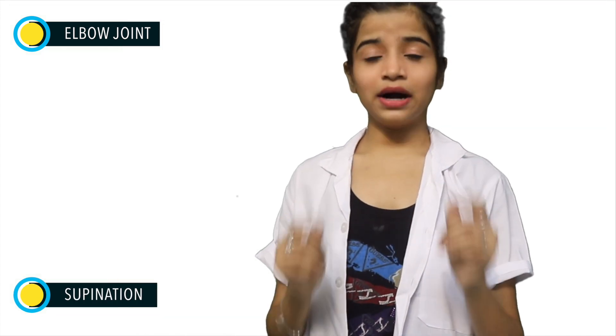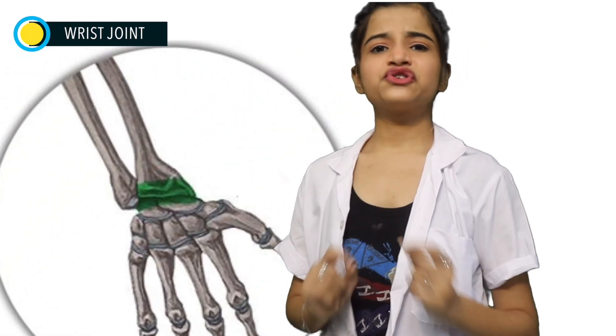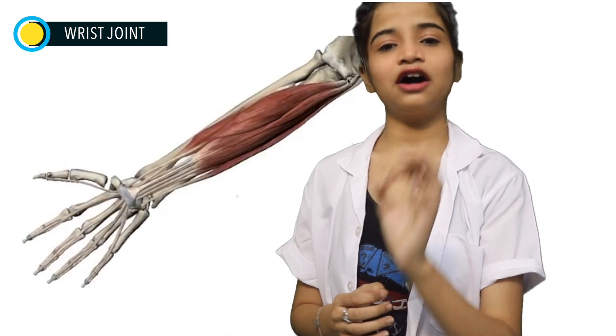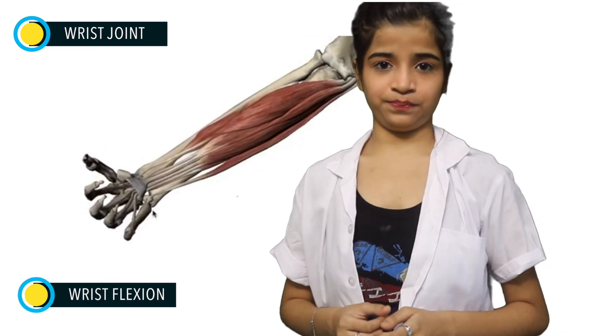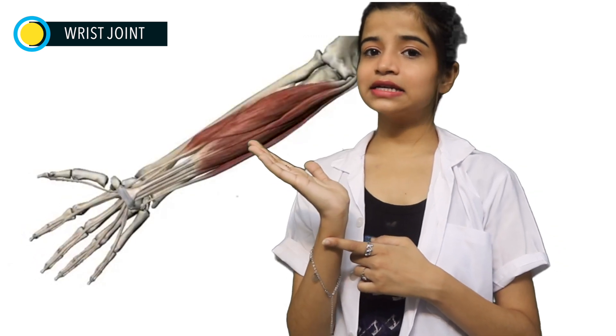Moving downward to the wrist joint — through lifting, gripping, and twisting, the humble wrist makes most of our day-to-day activities possible. Our first movement is bending our wrist downward — bending our wrist forward like this is called flexion.